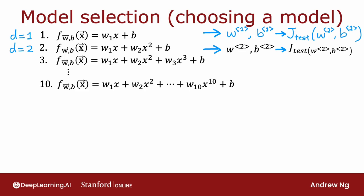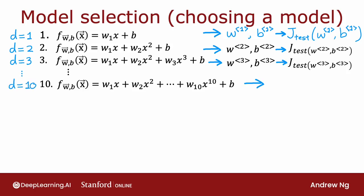This gives you a sense of how well the second-order polynomial does. You can go on to try d equals 3—a third-order or degree 3 polynomial—fit parameters, and similarly get J test. You might keep doing this until you try up to a tenth-order polynomial and end up with J test of w10, b10, giving you a sense of how well the tenth-order polynomial is doing.